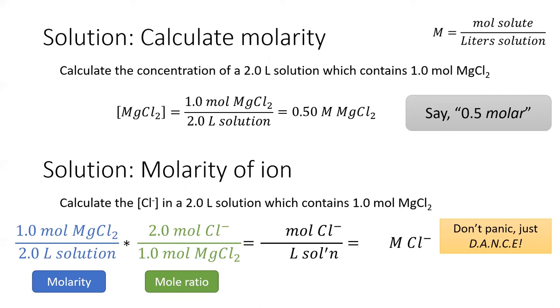How many chlorides are in one magnesium chloride? It's two. Multiplying this together, we get one mole of chloride per liter or a molarity of one.